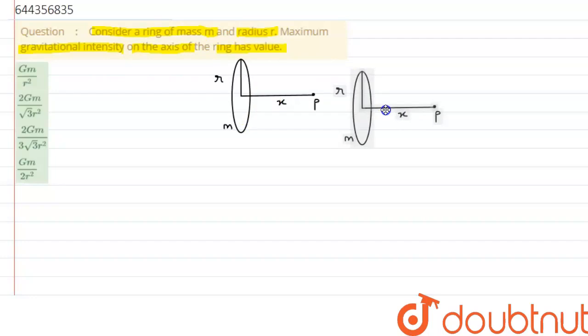Small ring of mass M, and we have to calculate the maximum gravitational intensity at this point P. So we know the gravitational intensity at point P due to the ring can be written as G_P, and that is